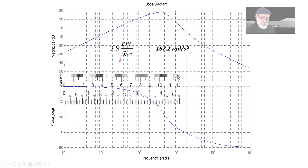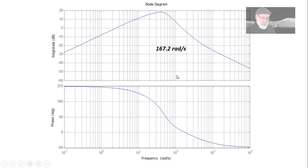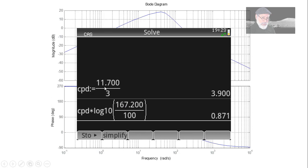Let's see how far to the right of 100 in decades 167 is. We do the math. We know that the centimeters per decade is 11.7 divided by 3, 3.9. We multiply that by the number of decades between 167 and 100. And that turns out to be 0.87 centimeters.